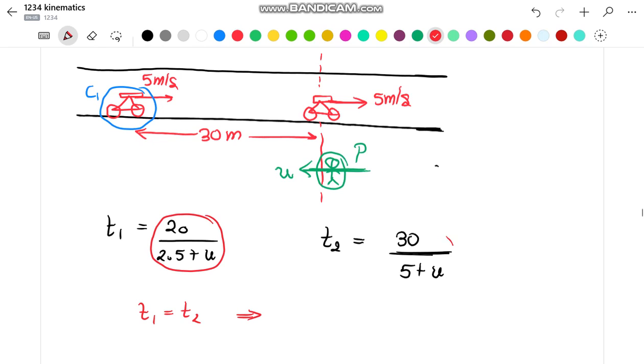Equating both these values and simplifying for u, we can find the final value of u which comes out to be equal to 2.5 meter per second, which on conversion gives us 9 kilometer per hour. This is our final desired result. Thank you.